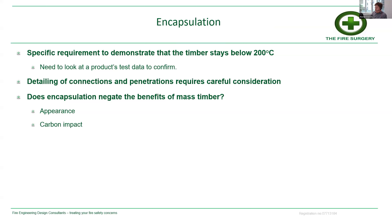We're going to talk much more about performance-based design going forward, because that's where the interesting engineering is and where the harder challenges lie. The first option available in a higher consequence class, higher height building is an encapsulation approach. On the face of it this sounds straightforward, but actually needs more work than might first be realized. The key requirement is that a boarding product must demonstrate that the non-exposed — timber side — will stay below 200°C, and that has to come from the product's test data. You can't just choose any fireboarding product; you have to choose one that specifically demonstrates that performance criterion.